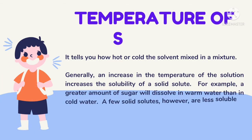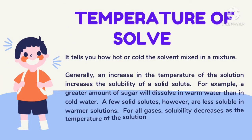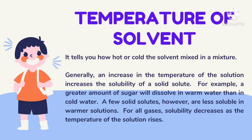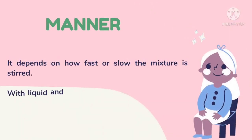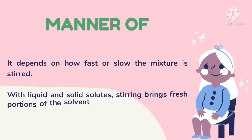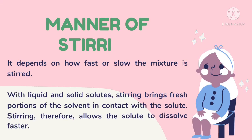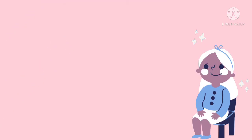Temperature of solvent: it tells you how hot or cold the solvent is in a mixture. Manner of stirring: it depends on how fast or slow the mixture is stirred. Therefore, it allows the solute to dissolve faster.